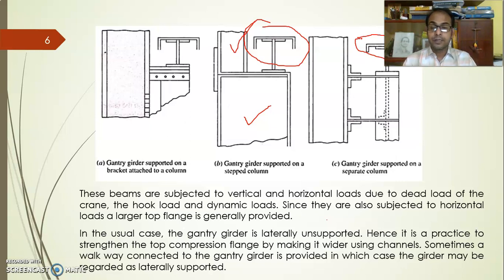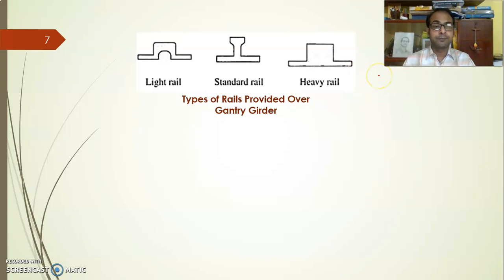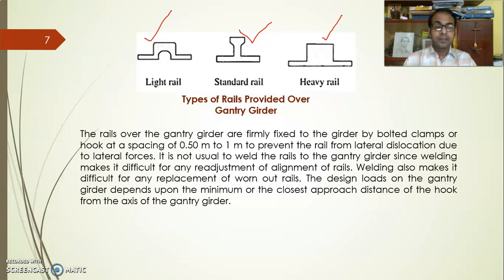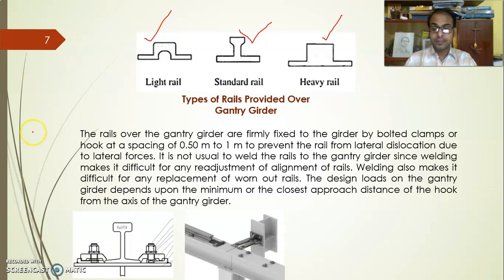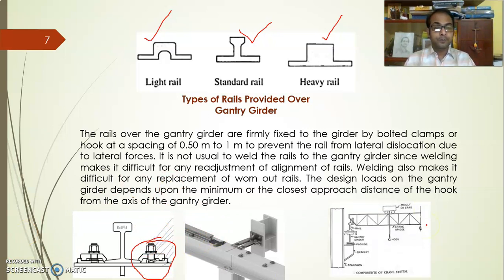These are the different types of rails that may be provided: the heaviest rail, the common general standard rail, and light rails for lighter gantry girders. We do not weld the rail to the gantry girder because we need to carry out maintenance from time to time, maintain the gauge, and welding can also create stress due to thermal expansion. Therefore, the rail is fixed using clips, as shown here — it is fixed but not with rigid welding.